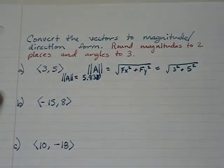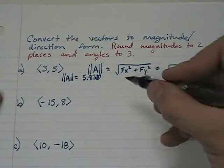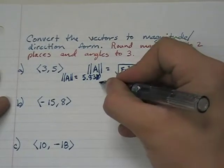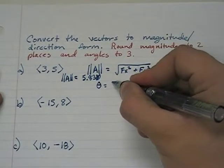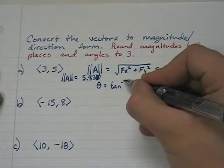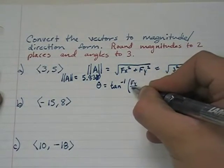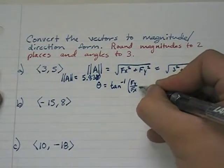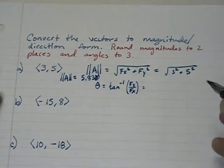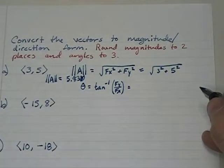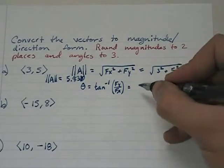Then they ask us to find the angle. We can write this down real simple. The angle theta for any vector is the inverse tangent of the y component divided by the x component.